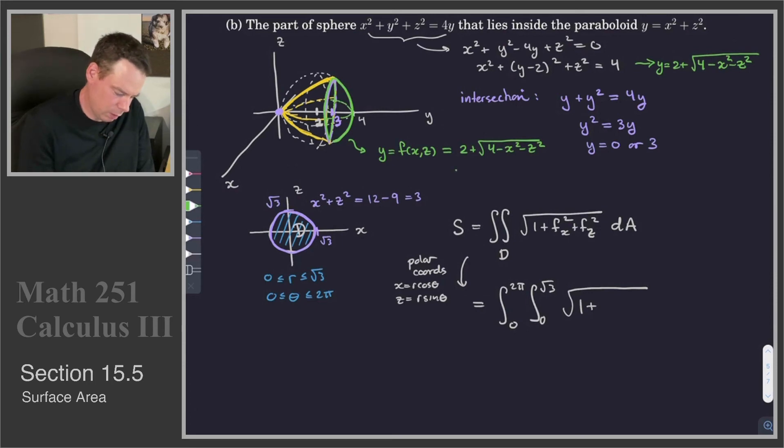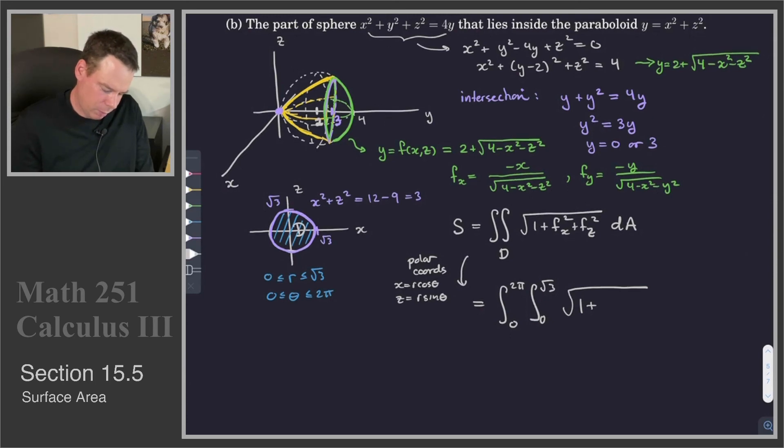So we'll go back here and we'll just make a note that f sub x is equal to, it's the derivative of that square root. So we get a square root in the denominator, square root of 4 minus x squared minus z squared. And then derivative of the inside is negative 2x. That just gives us a negative x on top because the 2 would have cancelled with the 1 half when I took the derivative of the square root. f sub y, same thing. Negative y over square root of 4 minus x squared minus y squared. And so then if I square each of those and add them up, I get an x squared plus a y squared all over 4 minus x squared minus y squared.